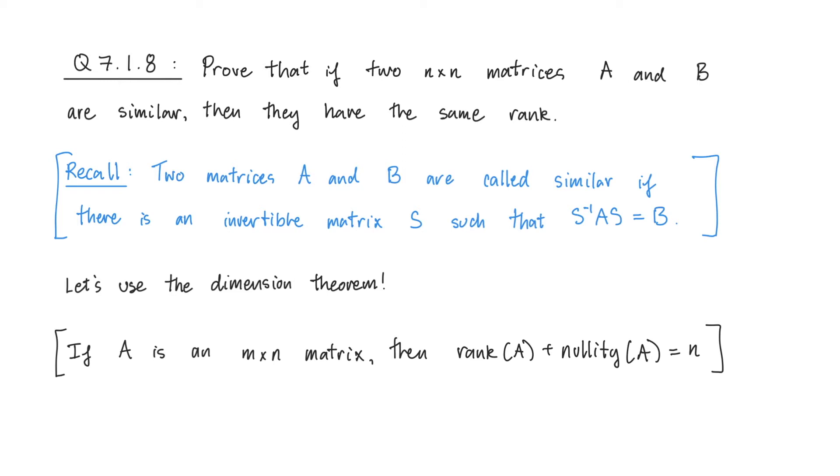Recall that two matrices A and B are called similar if there's another invertible matrix S, such that S inverse times A times S is equal to B. My goal for this video is to show you how I would approach a problem like this, and to give you a different way of solving this problem. If you have a look at the solutions for the textbook, you'll find a different solution there, and you should compare it with this one.